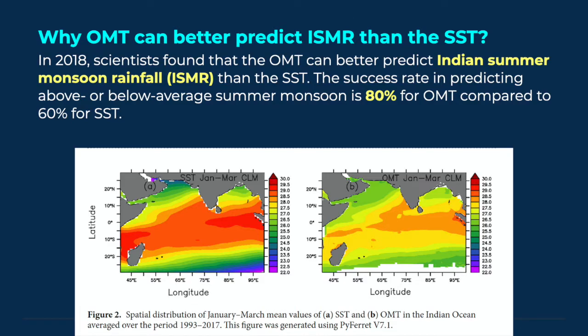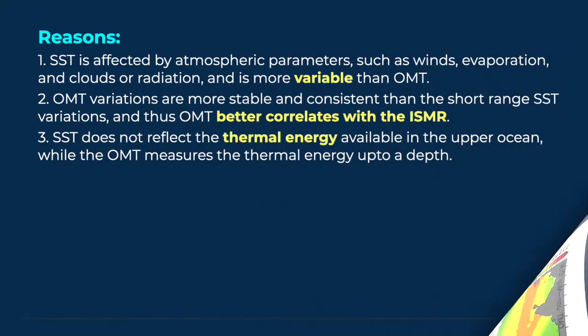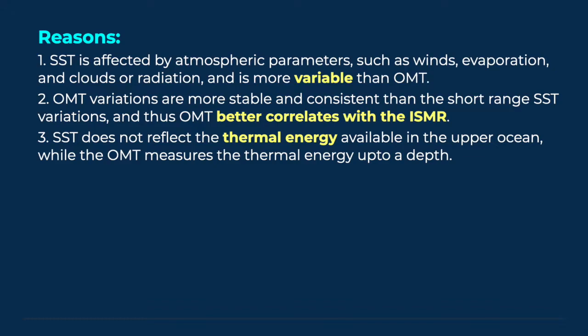Why can ocean mean temperature better predict Indian summer monsoon rainfall than sea surface temperature? According to a statistical study conducted in 2018, the success rate of OMT in predicting above or below average summer monsoon is 80%, while the success rate of SST is just 60%. This is because SST is affected by atmospheric parameters such as winds, evaporation, clouds and radiation, and is more variable than OMT. OMT variations are more stable and consistent than short-range SST variations, and thus OMT better correlates with Indian summer monsoon rainfall.